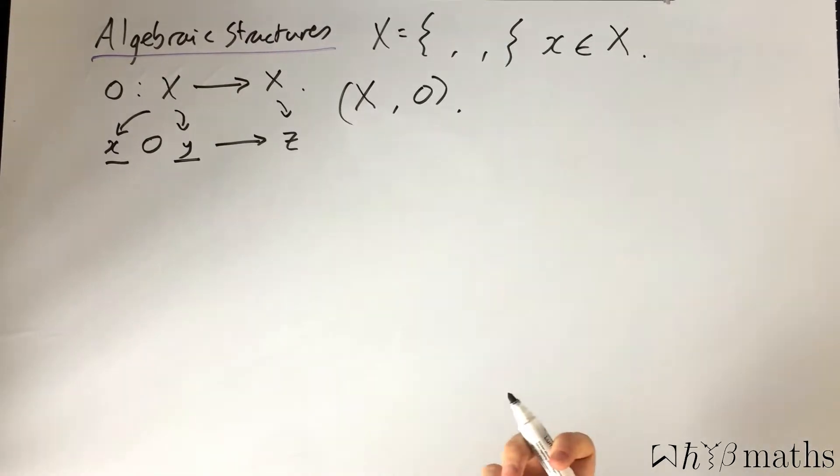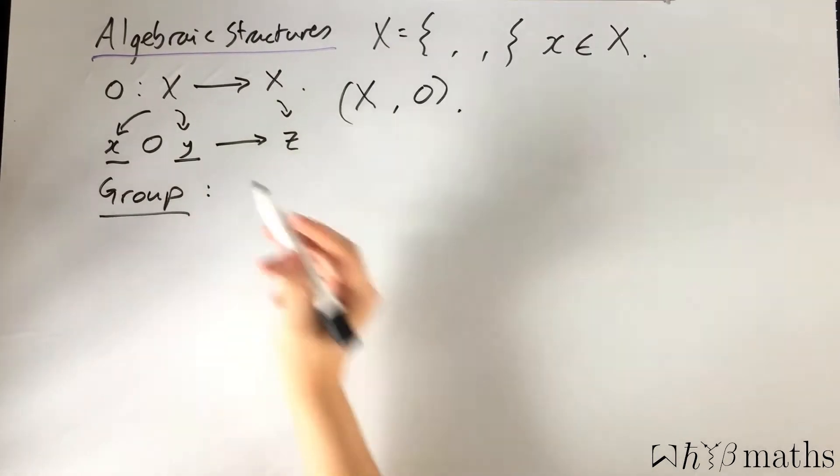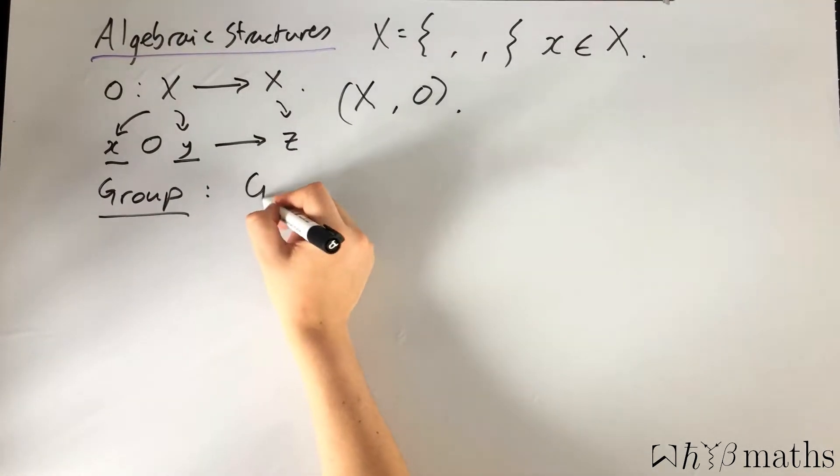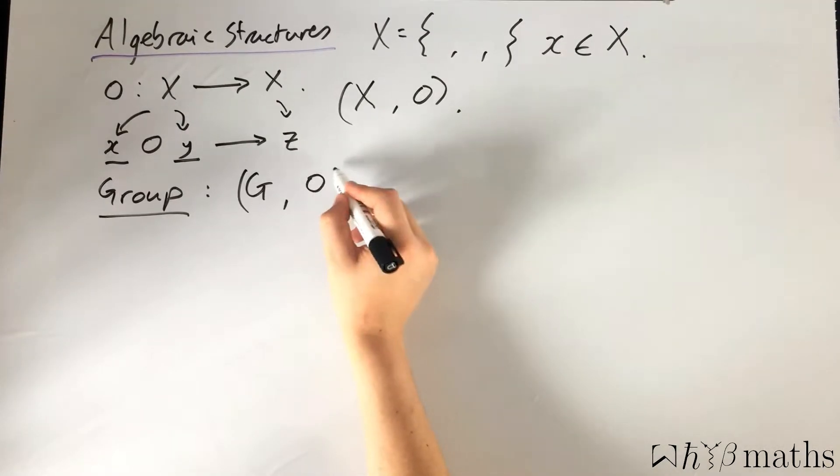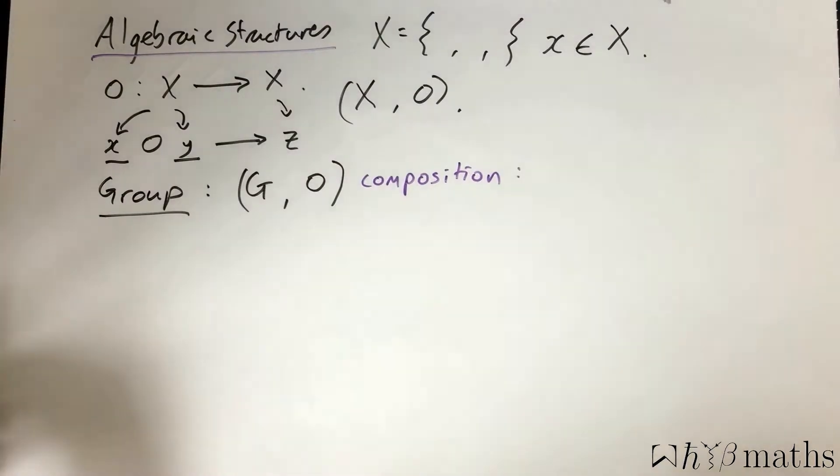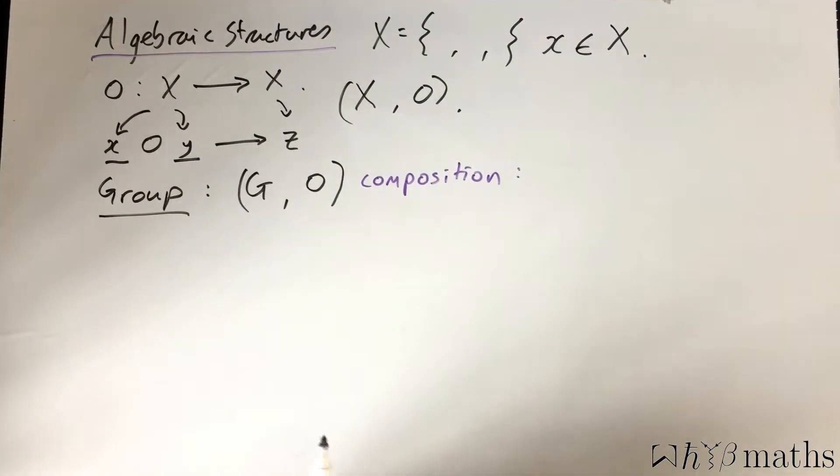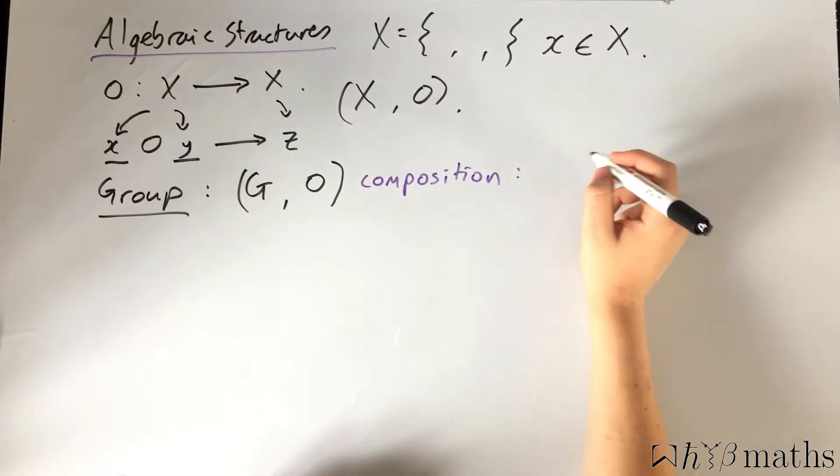An algebraic structure you may have heard of before is that of a group. So a group, I'll give it the name G, is simply a set combined with an operation which we call composition. Now this composition operation, or map,